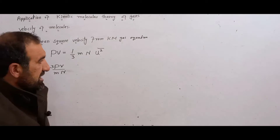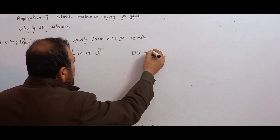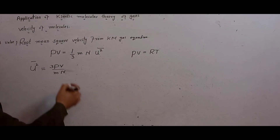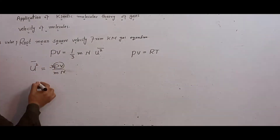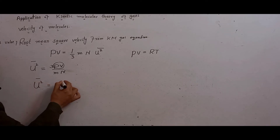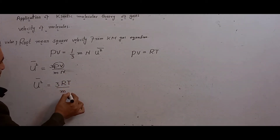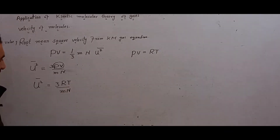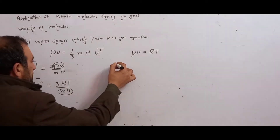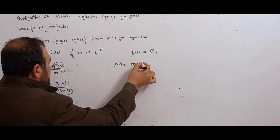Mean square velocity equals 3PV divided by MN. For the ideal case, per 1 mol, PV = RT. Now substituting PV = RT, the mean square velocity becomes 3RT divided by MN. Here M is the mass of one molecule and N is the number of molecules, so MN represents the molar mass.